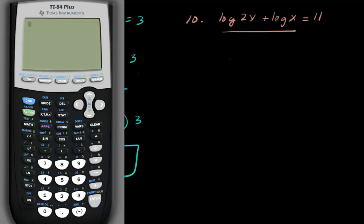This is once again expanded, so I'm going to condense that. So log of 2x times x, I'm using the product property. So that becomes log of 2x squared equals 11.